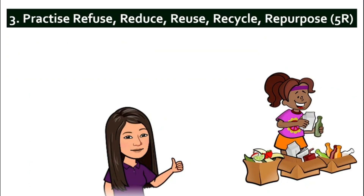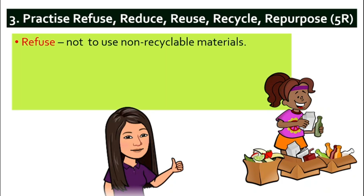Number three, we can practice 5R: refuse, reduce, reuse, recycle, and repurpose. First, refuse — we do not want to use anything that cannot be recycled. For example, if there is a choice between a polystyrene food container and a cardboard food container, we will choose the cardboard. We do not want to use polystyrene because it cannot be recycled.